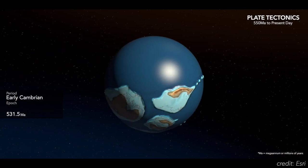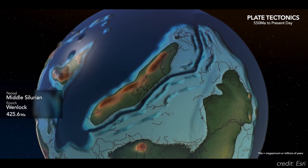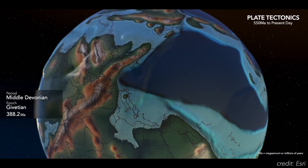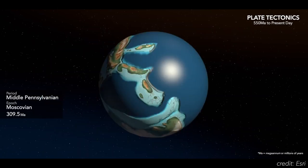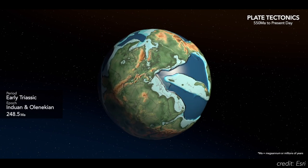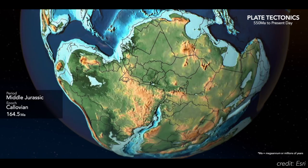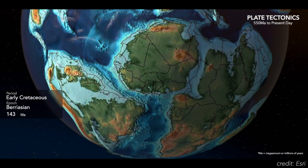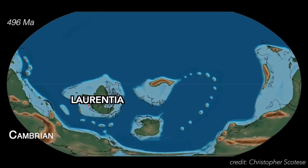Add to this the low latitude confirmed by paleomagnetic data. In paleomagnetism, rocks are studied that have iron-rich minerals, and these ferrous sediments captured the magnetic fields of the Earth when they were deposited, allowing us to know where on the Earth they were formed. Amazing! Eventually, the epicratonic seas would recede.